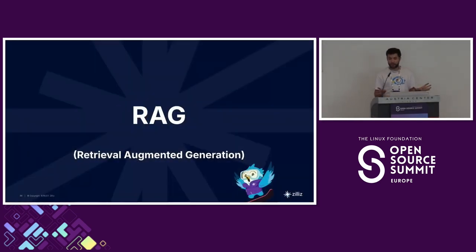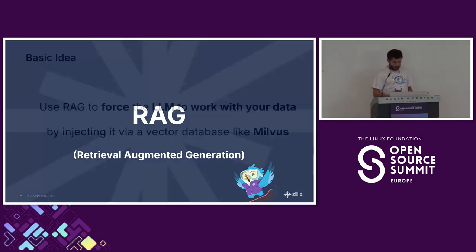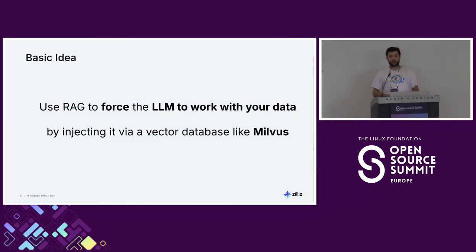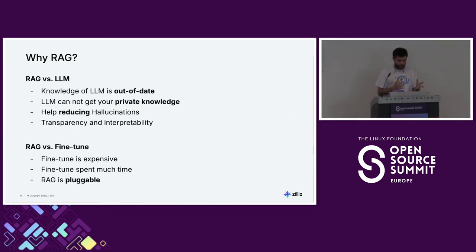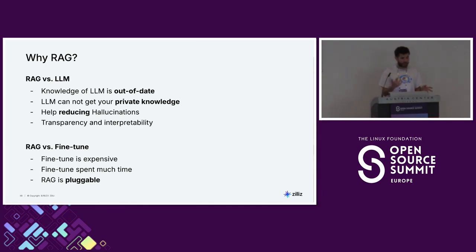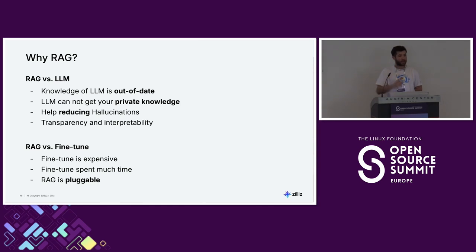Has everyone heard about RAG — Retrieval Augmented Generation? The basic idea is you force your LLM to work with your data. Some reasons it's popular: the LLM's knowledge might be out of date, and your LLM doesn't know about private knowledge. It also helps reduce hallucinations — I'm insisting on 'reducing.' RAG doesn't remove hallucinations, so be careful. For example, Lyft earnings and Uber earnings are very similar documents — if you ask about Uber, the LLM might give you an answer about Lyft.